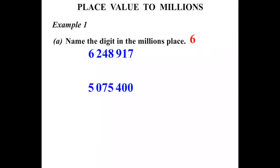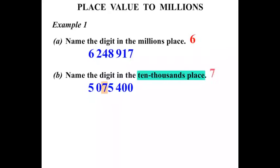This next number, 5,075,400. We're asked to name the digit in the ten-thousands place. We're concentrating on the ten-thousands. But we start again from the right: ones, tens, hundreds, thousands, ten-thousands. That's the one we're after. The answer is 7.